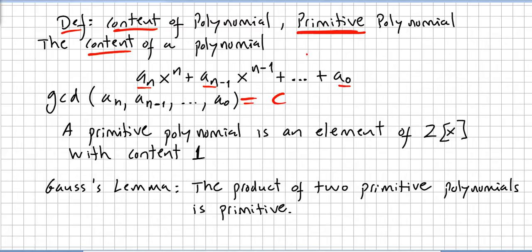Now, the concept of primitive. A primitive polynomial is an element in the polynomial ring of the integers with content 1. That's what is called a primitive polynomial.